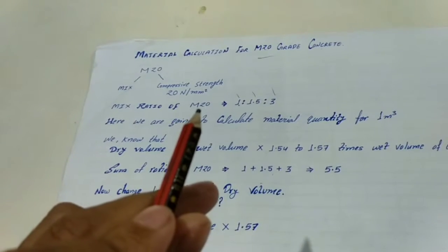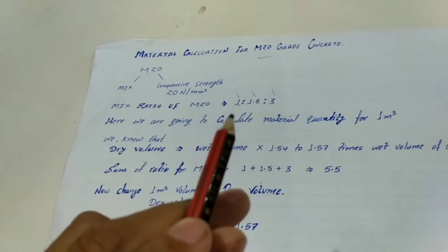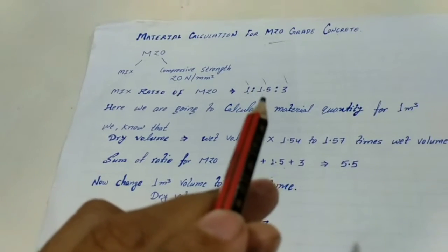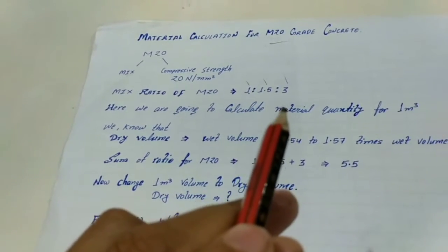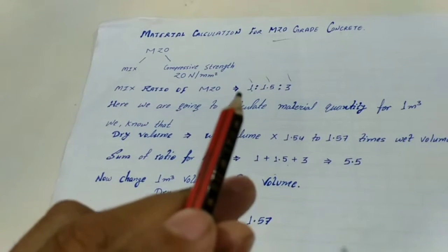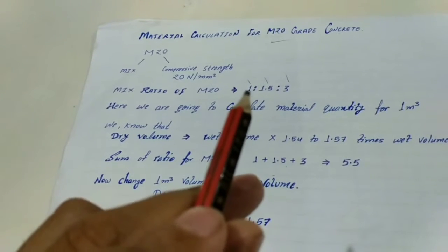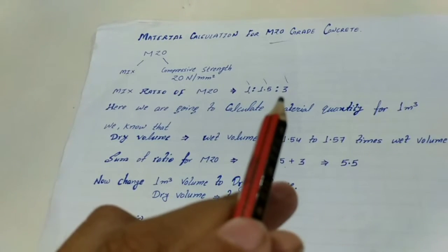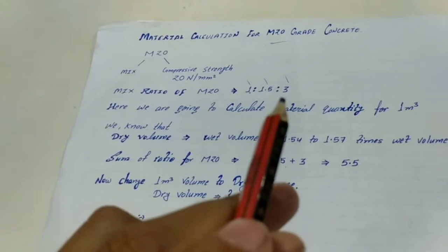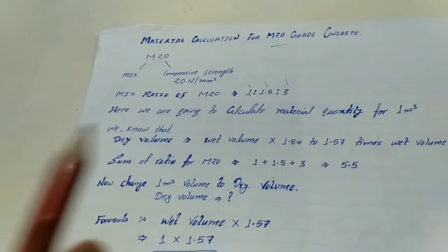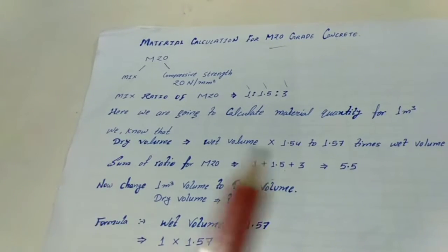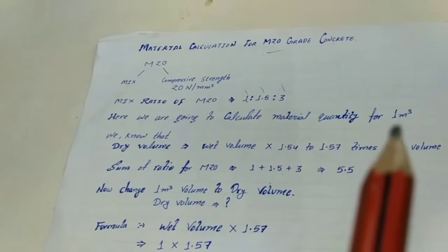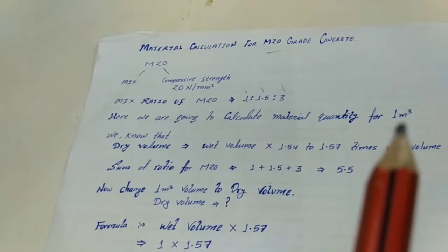The mix ratio of M20 is 1:1.5:3 — here 1 is for cement, 1.5 is for sand, and 3 is for crushed stones. We are going to calculate material quantity for 1 cubic metre of concrete.